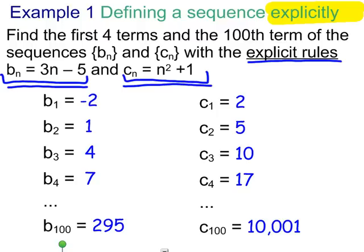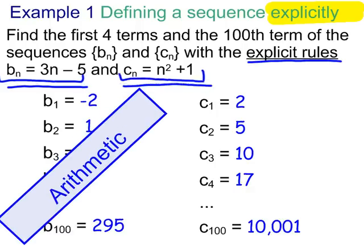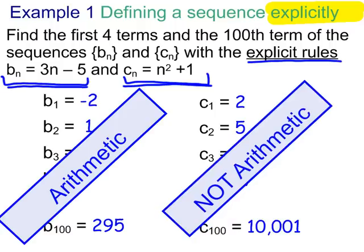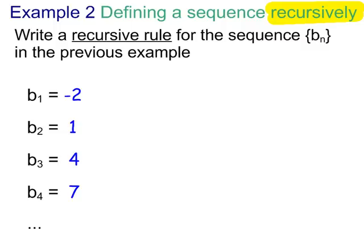And again, just to emphasize our terminology here. The first one, b sub n, is arithmetic. The second one, c sub n, which looks more like a quadratic function, we're not going to come up with a special term for that. We're just going to say it's not arithmetic.